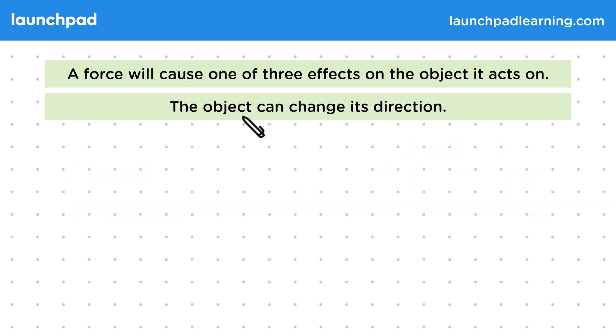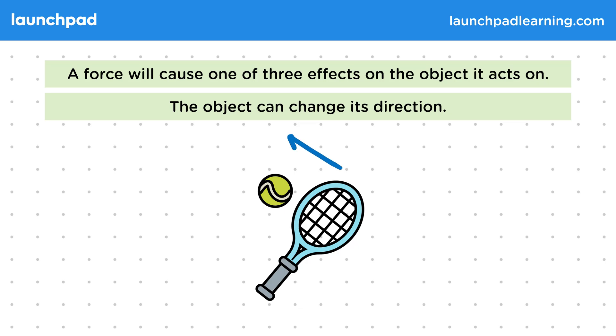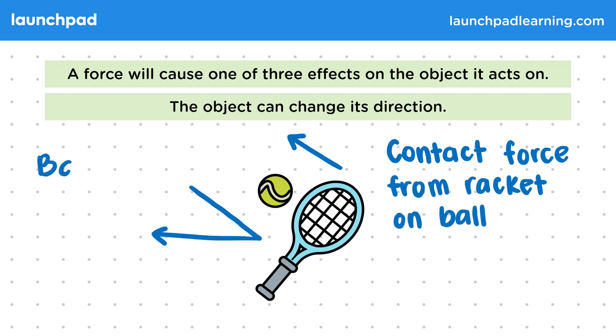The object could also change its direction. For example, a ball being hit by a racket. The contact force from the racket on the ball causes the ball to change direction, so the ball bounces back. We can combine this change in direction and the change in speed shown on the previous slide to say that the velocity of the object can change.